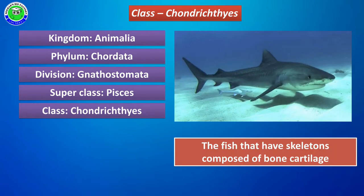In the name Chondrichthyes, it refers to members having an endoskeleton. This endoskeleton is made up of a special tissue called cartilage, also called smooth bone.